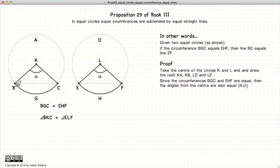Now since the circumferences are equal, BGC is equal to EHF, according to Proposition 27 of Book 3, the angle BKC is equal to the angle ELF. In other words, this angle is equal to that angle.